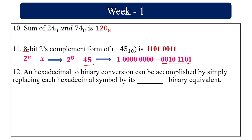Hexadecimal to binary conversion is accomplished by replacing each hexadecimal symbol with its 4-bit binary equivalent. Hexadecimal ranges from 0 to 15; the maximum value is 15, and the binary representation of 15 requires 4 bits. For octal to binary, octal ranges from 0 to 7, and 7 in binary requires 3 bits, so octal digits are replaced by 3-bit binary equivalents.